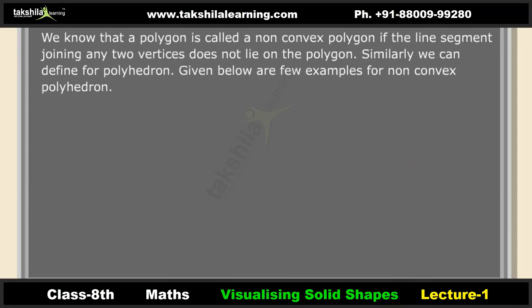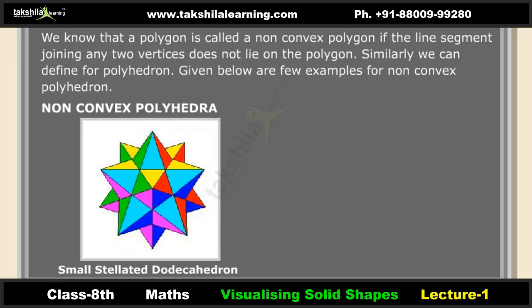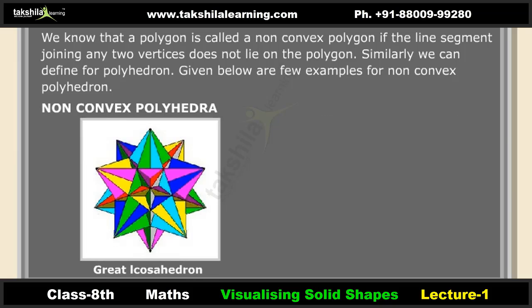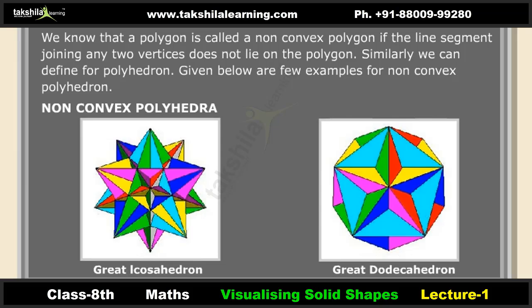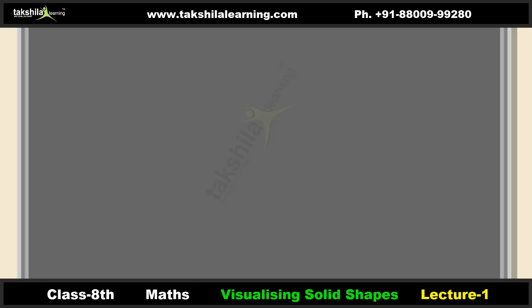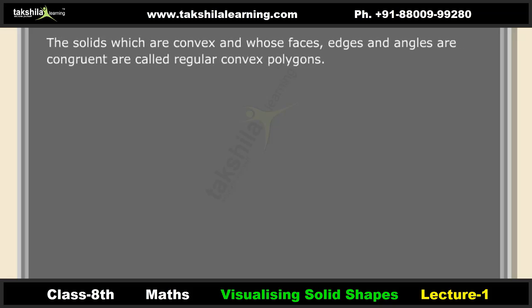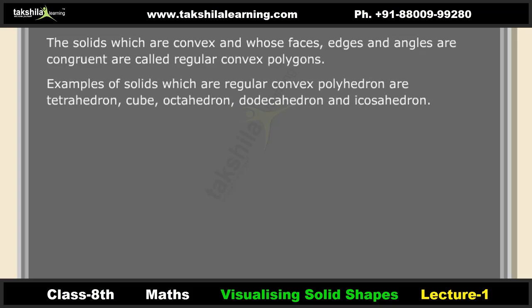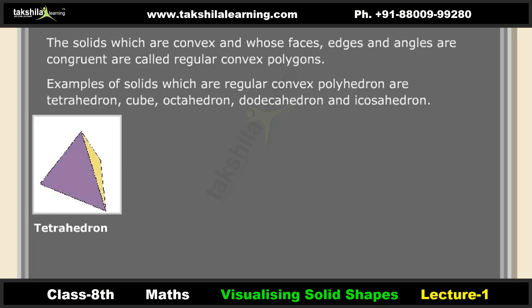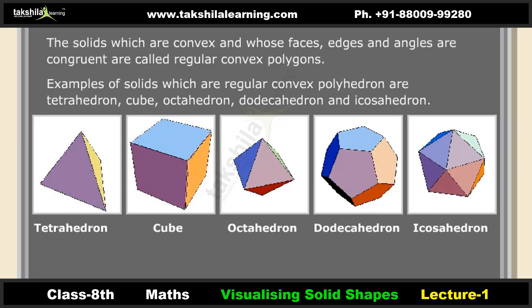A polygon is called a non-convex polygon if the line segment joining any two vertices does not lie on the polygon; similarly we can define non-convex polyhedrons. Examples of non-convex polyhedrons include the small stellated dodecahedron, great stellated dodecahedron, great icosahedron, and great dodecahedron. Regular convex polyhedrons are solids which are convex and whose faces, edges and angles are congruent — examples include tetrahedron, cube, octahedron, dodecahedron and icosahedron.